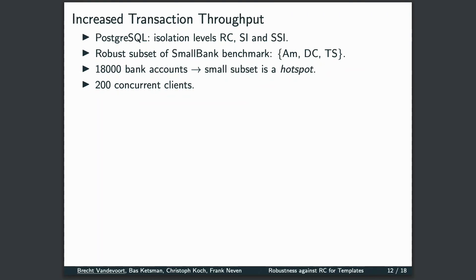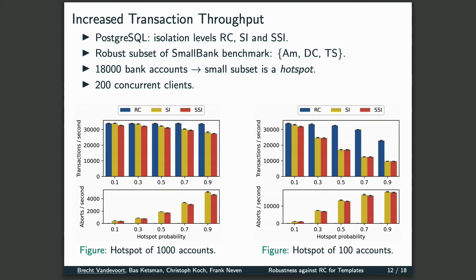To verify whether robustness indeed leads to an increased transaction throughput, we ran a robust subset of the SmallBank benchmark on a Postgres database implementing three different isolation levels. We populated the database with 18,000 bank accounts and selected a small subset to act as a hotspot. In these figures, we see that Read Committed, which is the leftmost bar, results in a significantly higher transaction throughput when contention increases due to a smaller hotspot or increased hotspot probability.